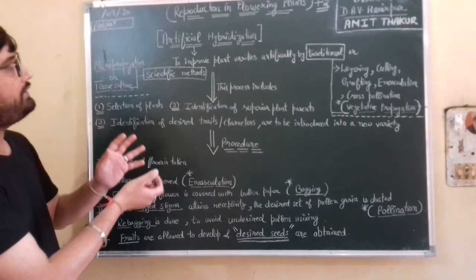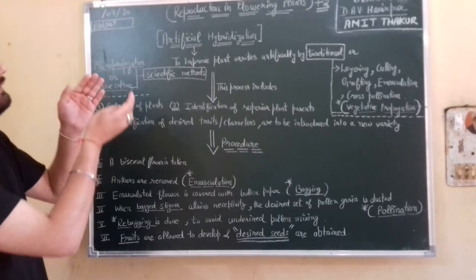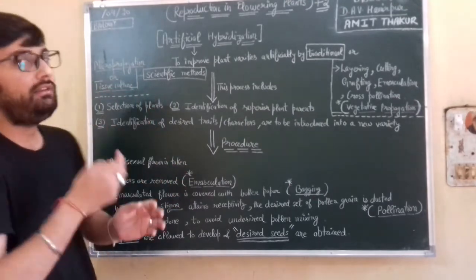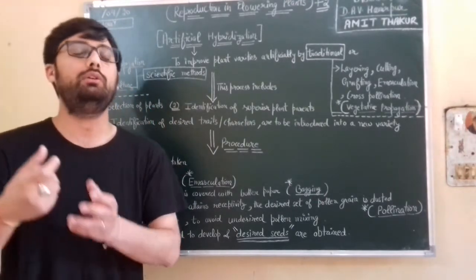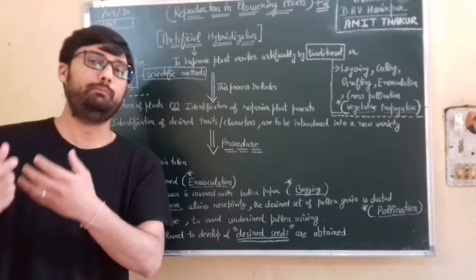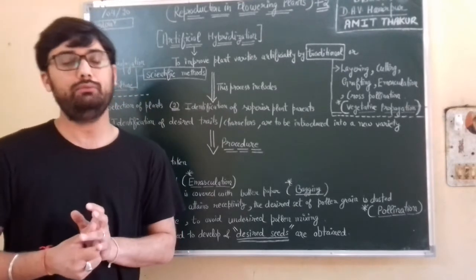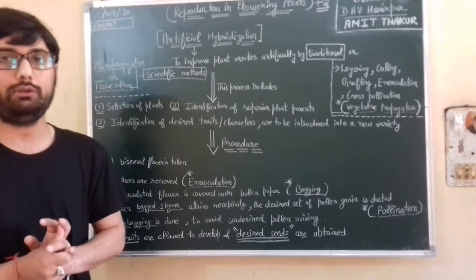So this is all about artificial hybridization. And the central idea of this process is just to improve the plant variety for betterment or for the benefits of social welfare or human race. Thank you, thank you very much.